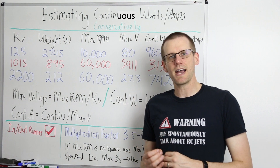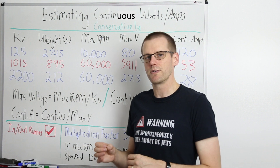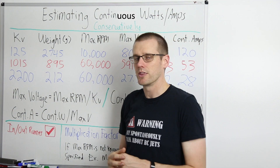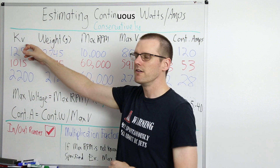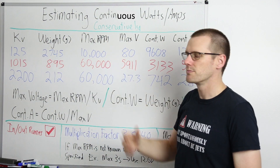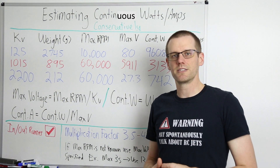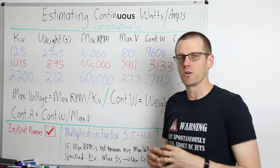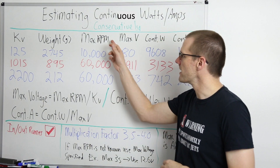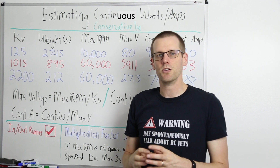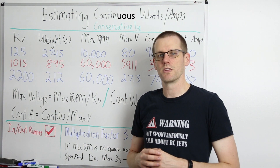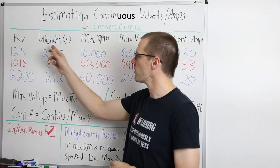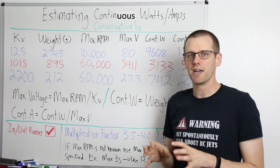Let's take a look at exactly how we determine this. I've laid out all the formulas on the board. The first values we have are the kV value, the weight in grams, and our maximum RPM value. Those three specifications are necessary to calculate voltage, wattage, and current for continuous operation. In some cases motor manufacturers don't provide the maximum RPM — we'll talk about how to work around that shortly. Ultimately, weight and kV are absolute musts. If a motor manufacturer won't tell you one of these values, you should not buy from that manufacturer.